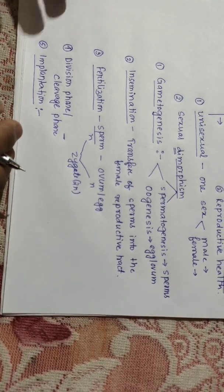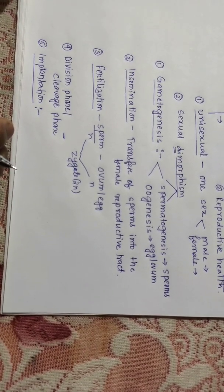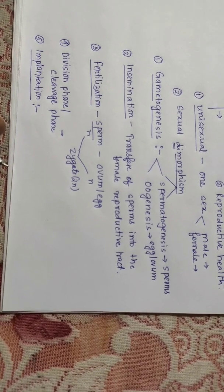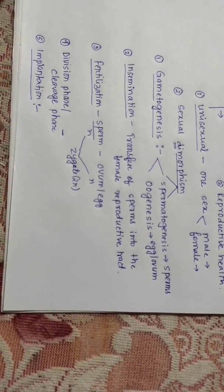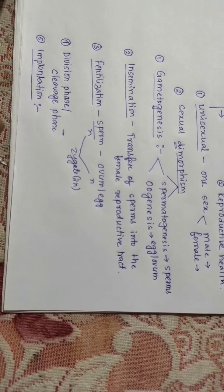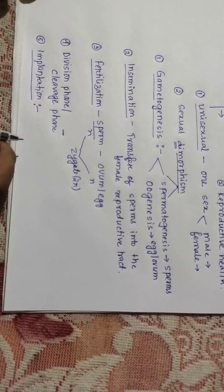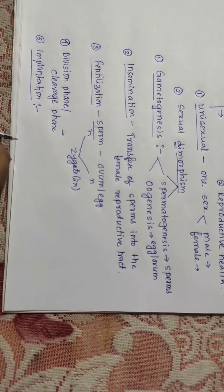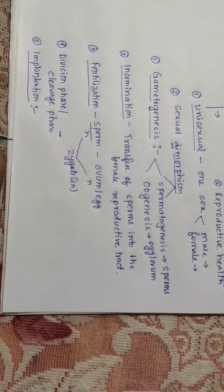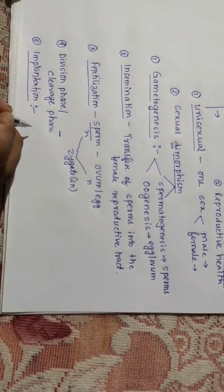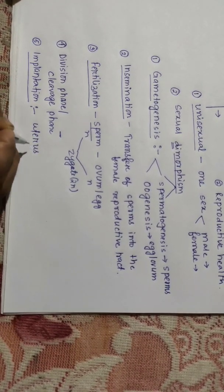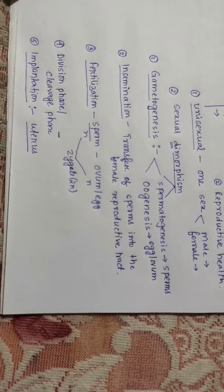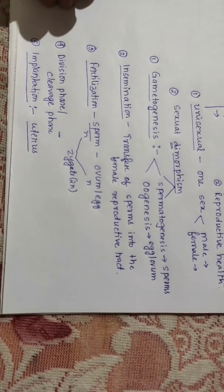The next phase of human reproduction is implantation. After undergoing division, the zygote has to be fixed inside the uterus so that a proper connection can be made between the maternal tissue and the fetal tissue. The fetal tissue requires nutrition, and this nutrition will be provided by the mother. In order to do that, the zygote is to be fixed inside the uterus. This fixation of the zygote inside the uterus is called implantation. This is the fifth phase.